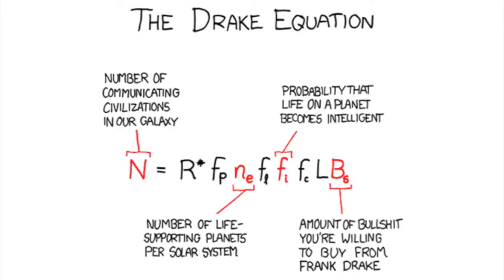You can see the huge uncertainty in the Drake equation. It's a simple trope of mathematics that the product of a series of numbers is as uncertain as the largest uncertainty. So the fact that we know the first three factors through astronomy increasingly well doesn't mean that the uncertainty goes away for the factors where we know nothing. Even Frank Drake recognized the limitations of his equation, and he called it a container for ignorance.